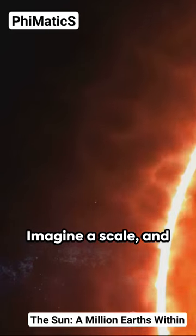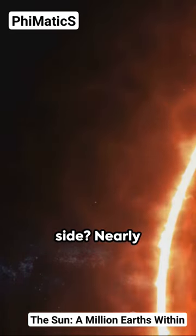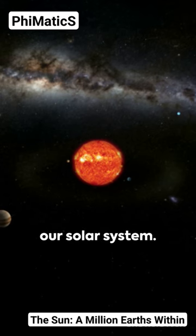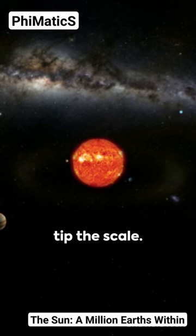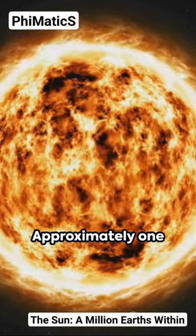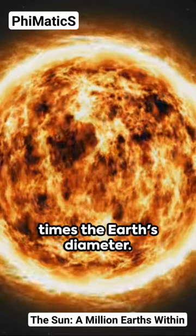Imagine a scale, and on one side is the Sun, and on the other side, nearly everything else in our solar system. The Sun would still tip the scale. Its size? Approximately 109 times the Earth's diameter.